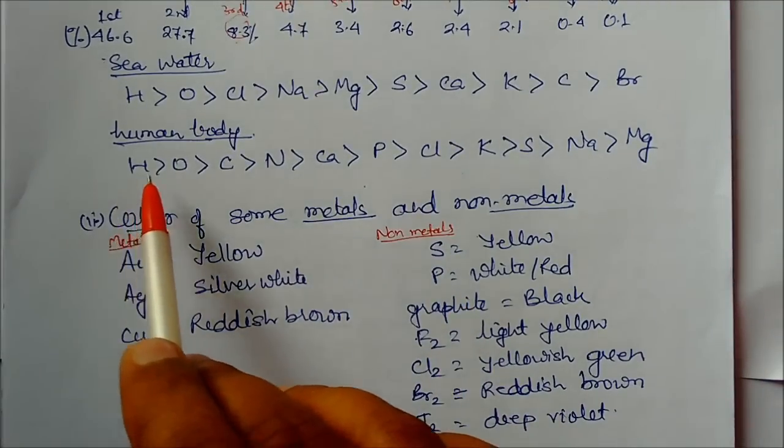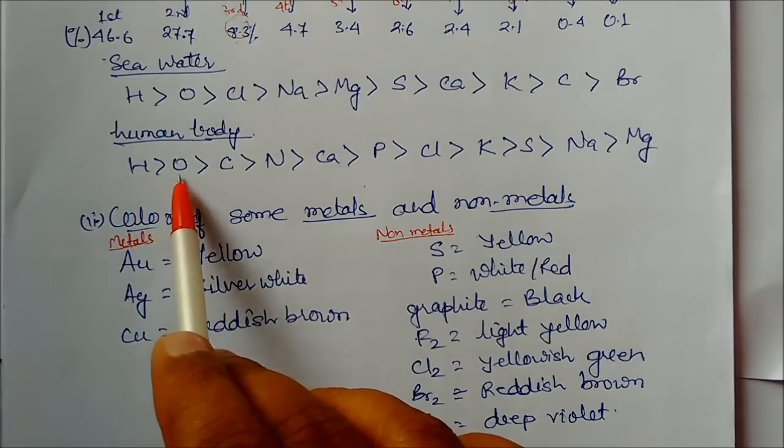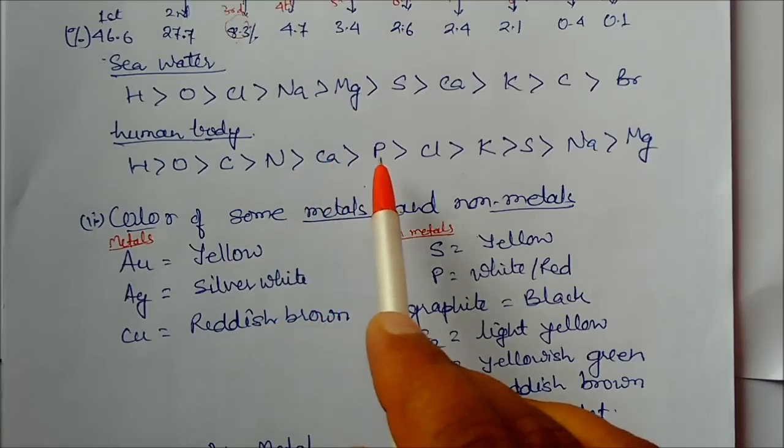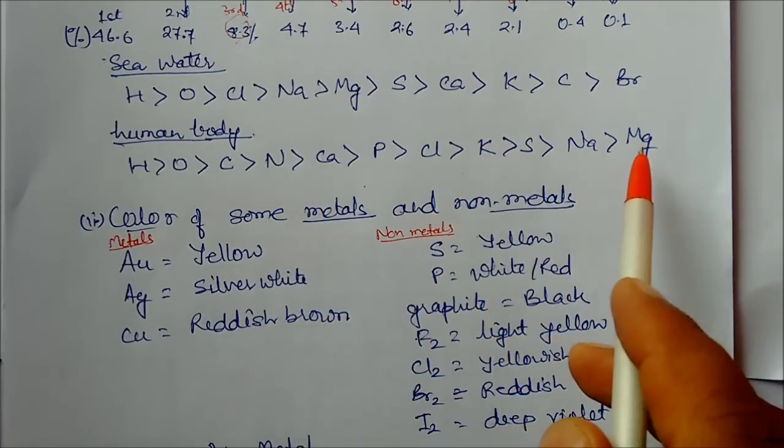In the human body, the concentration is highest for hydrogen, followed by oxygen, carbon, nitrogen, calcium, phosphorus, chlorine, potassium, sulfur, sodium, and magnesium.